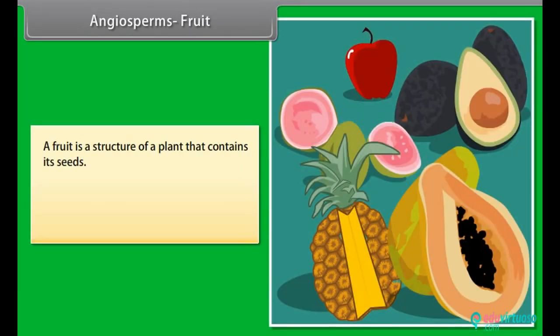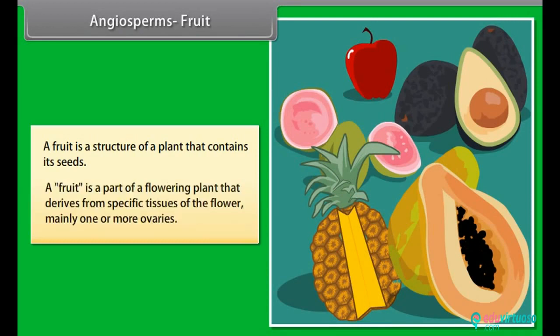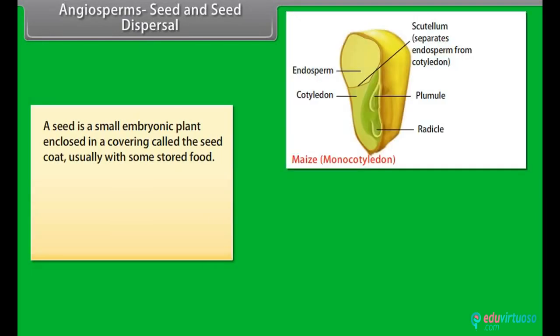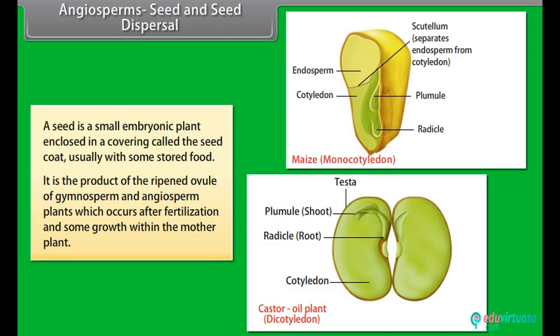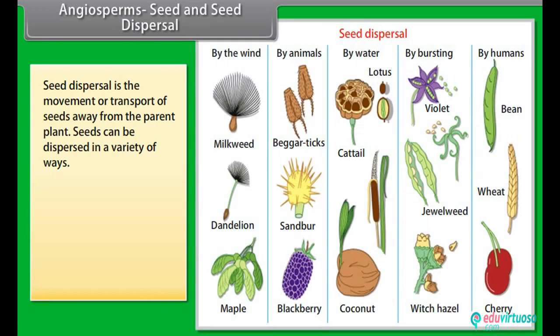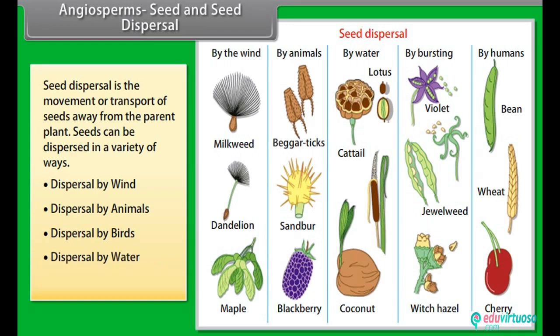A fruit is a structure of a plant that contains its seeds. A fruit is a part of a flowering plant that derives from specific tissues of the flower, mainly one or more ovaries. A seed is a small embryonic plant enclosed in a covering called a seed coat, usually with some stored food. It is the product of the ripened ovule of gymnosperm and angiosperm plants, which occurs after fertilization and some growth within the mother plant. Seed dispersal is the movement or transport of seeds away from the parent plant. Seeds can be dispersed in a variety of ways: dispersal by wind, by animals, by birds, by water, and by man.